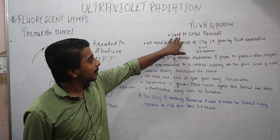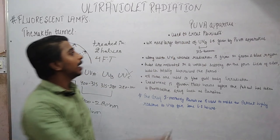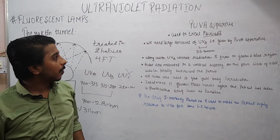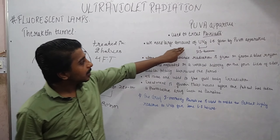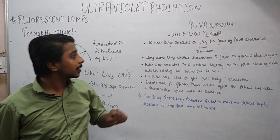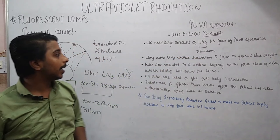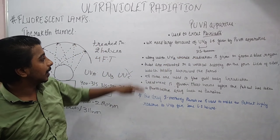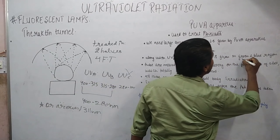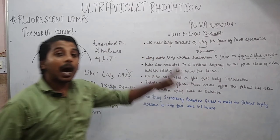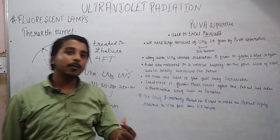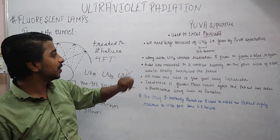Now we will move toward the UVA apparatus. As the name suggests — psoralen UVA — it is used for the treatment of psoriasis. We need a large amount of UVA, which is given by the PUVA apparatus. UVA is 315 to 400 nanometers. Along with UVA, some visible radiation is given, which is green and blue. From the UV spectrum, only UVA is given.